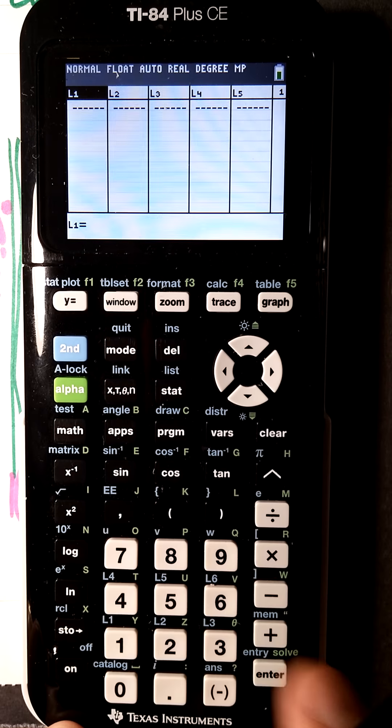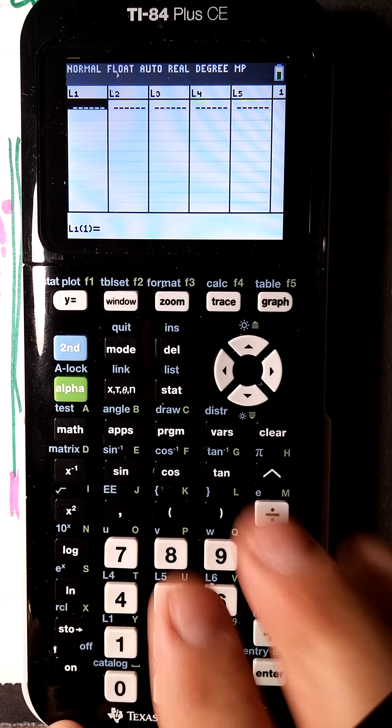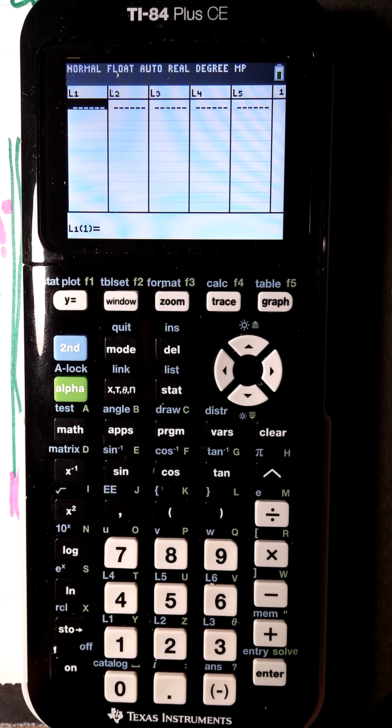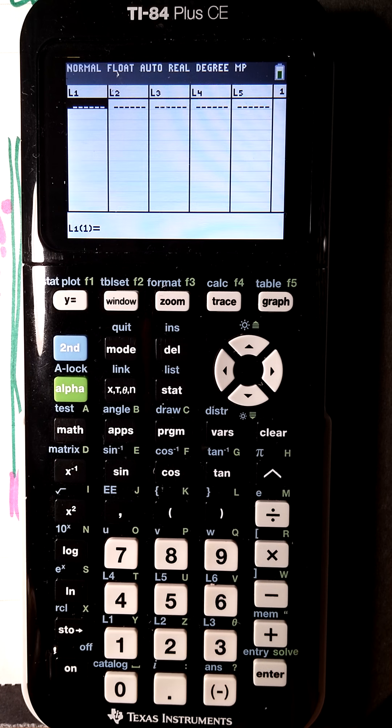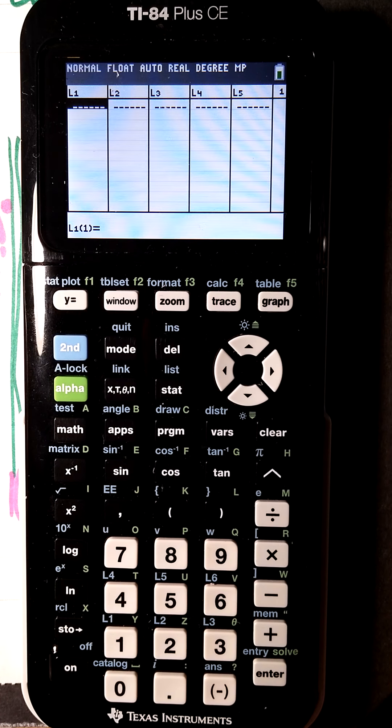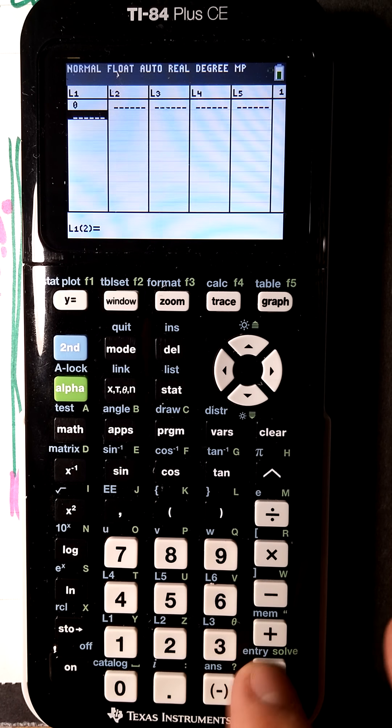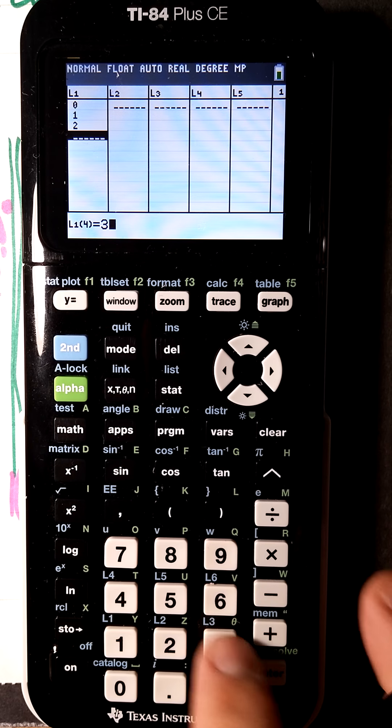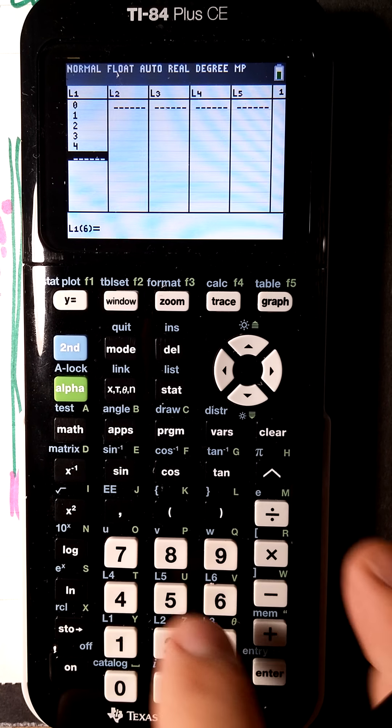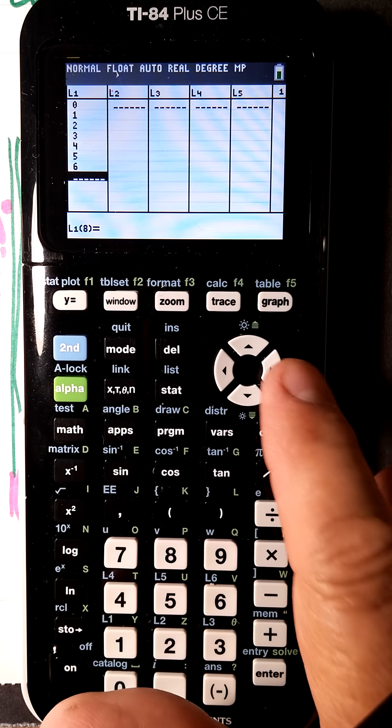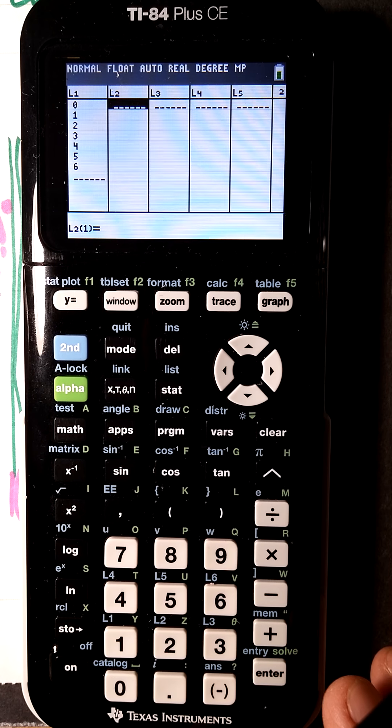Do that too. We'll need three lists here and then we'll find the sum of L3. In this first list L1, we're going to put in 0, 1, 2, 3, 4, 5, and 6. The second list is where we're going to do all these calculations.